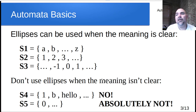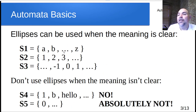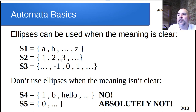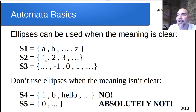Ellipses — the dot dot dot — can be used where the meaning is clear. For example, set one {A, B, ..., Z} would include C, D, E, F, G — the entire lowercase alphabet. And {1, 2, 3, ...} goes on infinitely: four, five, six, seven, eight, and so forth. Notice that in our definition of a set it didn't say it had to be finite — a set can be infinite, it's just a collection of unique elements. We can also use multiple ellipses, such as a set ranging from negative infinity to positive infinity.